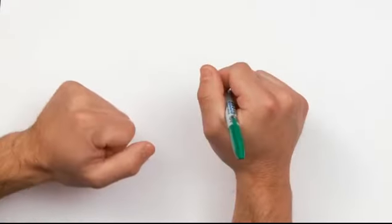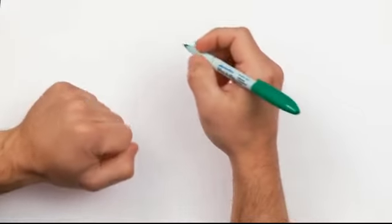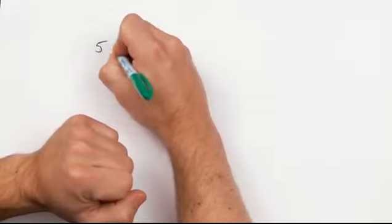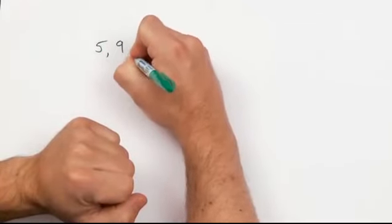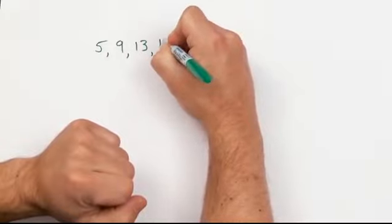Let's list the number of blocks in each figure so far. We call these numbers the terms of the pattern. The terms so far are 5, 9, 13, and 17.